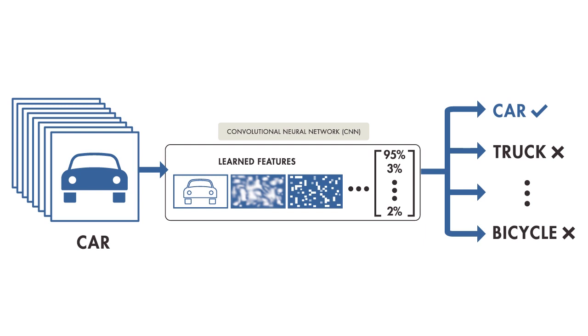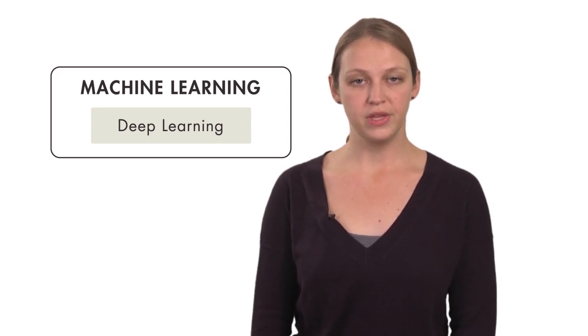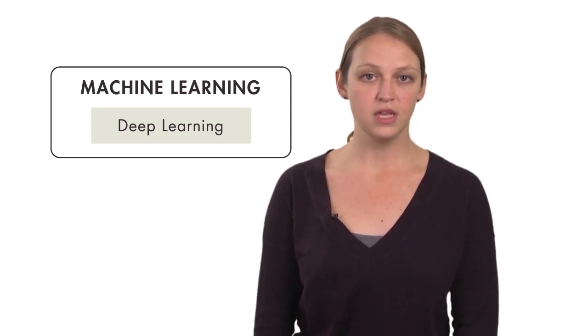On the other hand, with deep learning, you skip the manual step of extracting features from images. Instead, you feed images directly into the deep learning algorithm, which then predicts the object. So deep learning is a subtype of machine learning. It deals directly with images and is often more complex.